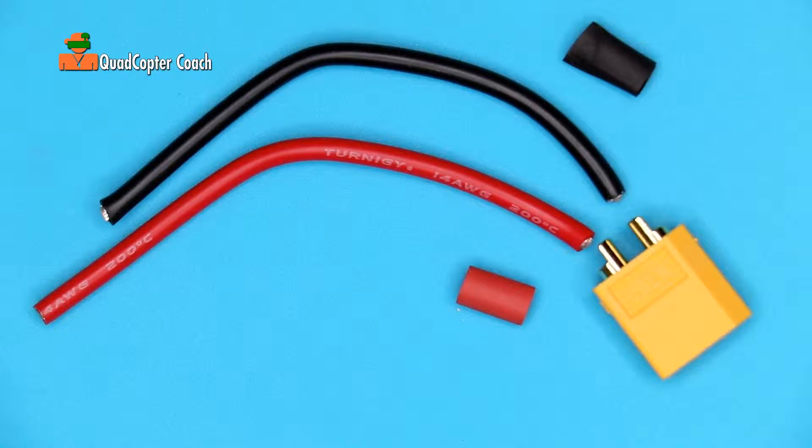We're going to make our battery connector now featuring our XT60 battery connector, our two wires, and our two pieces of shrink tube.